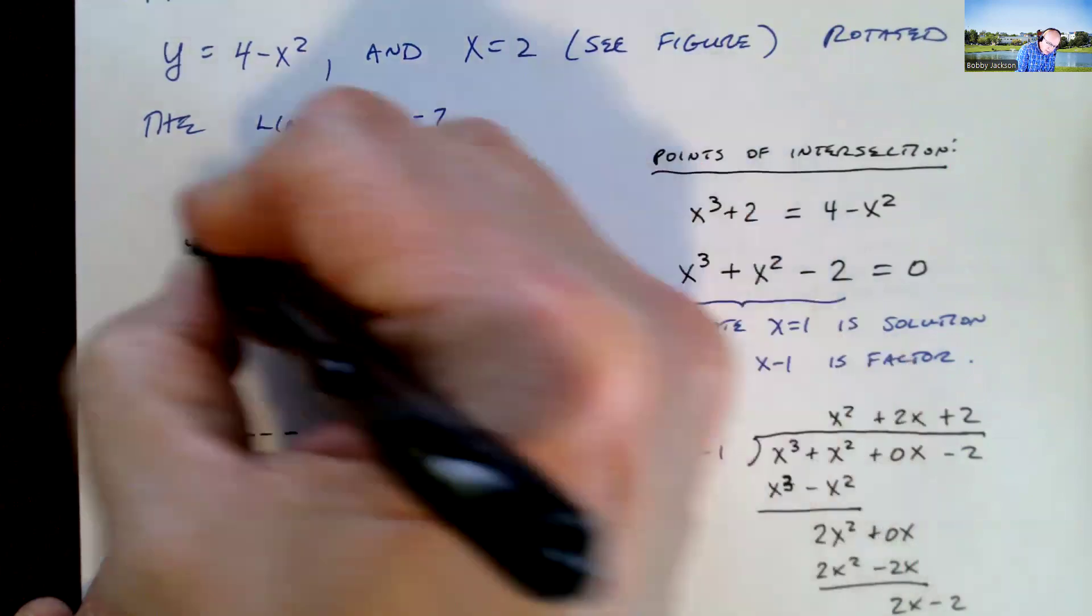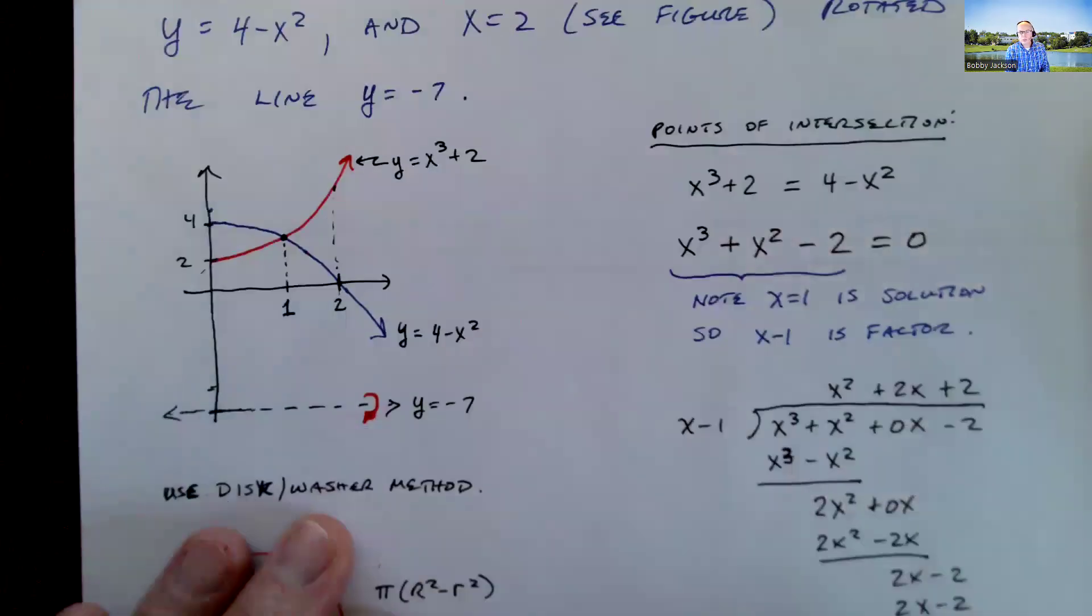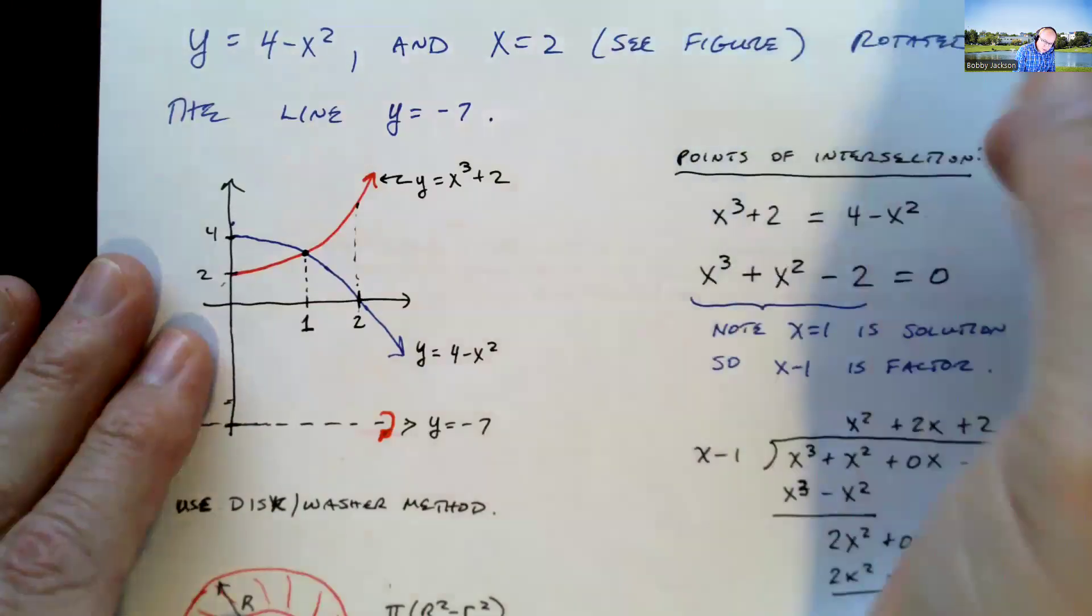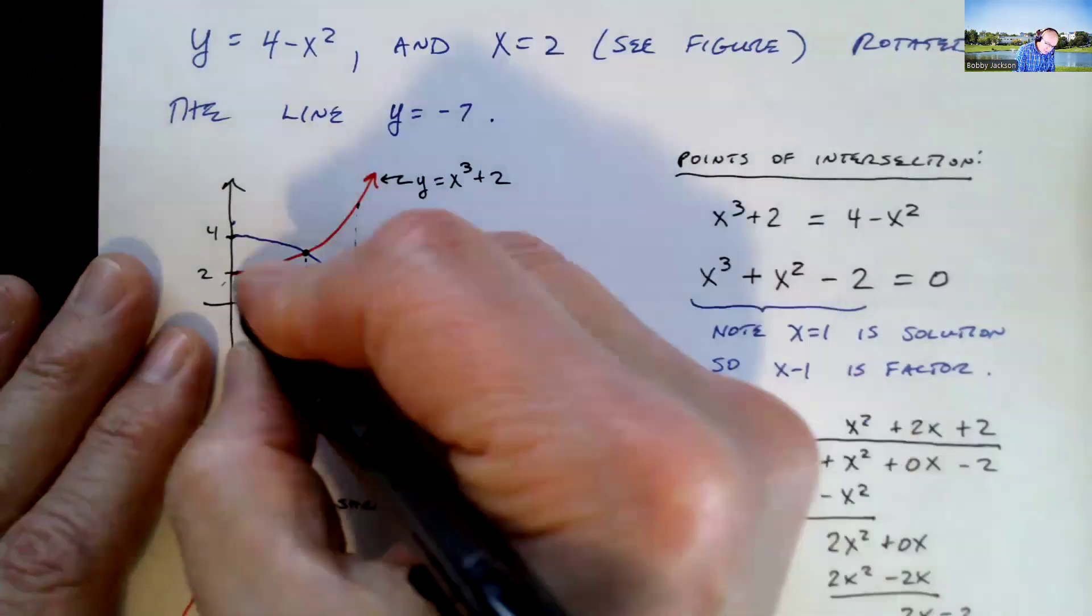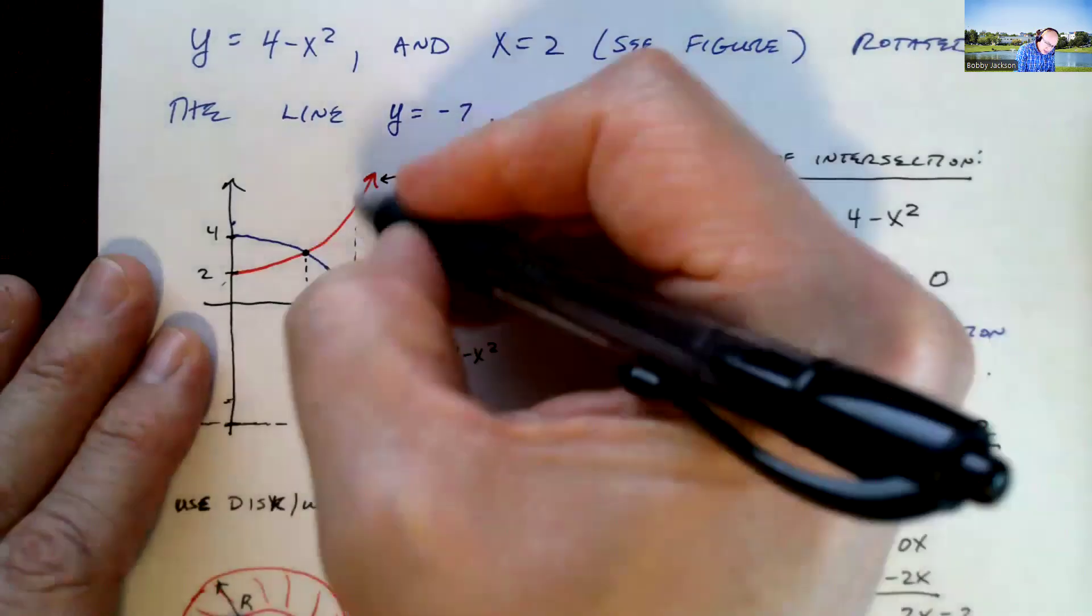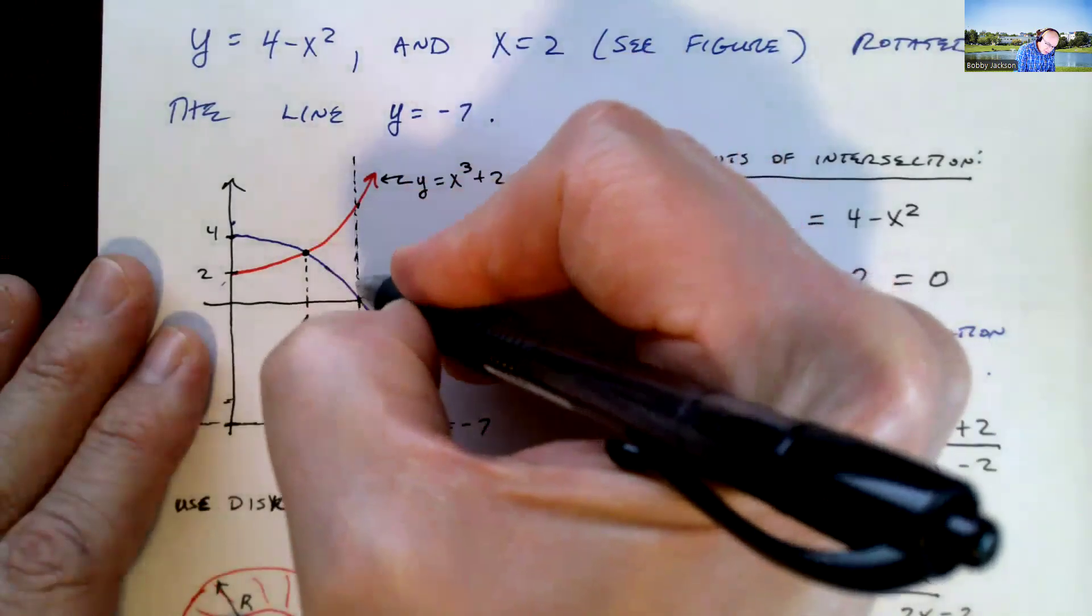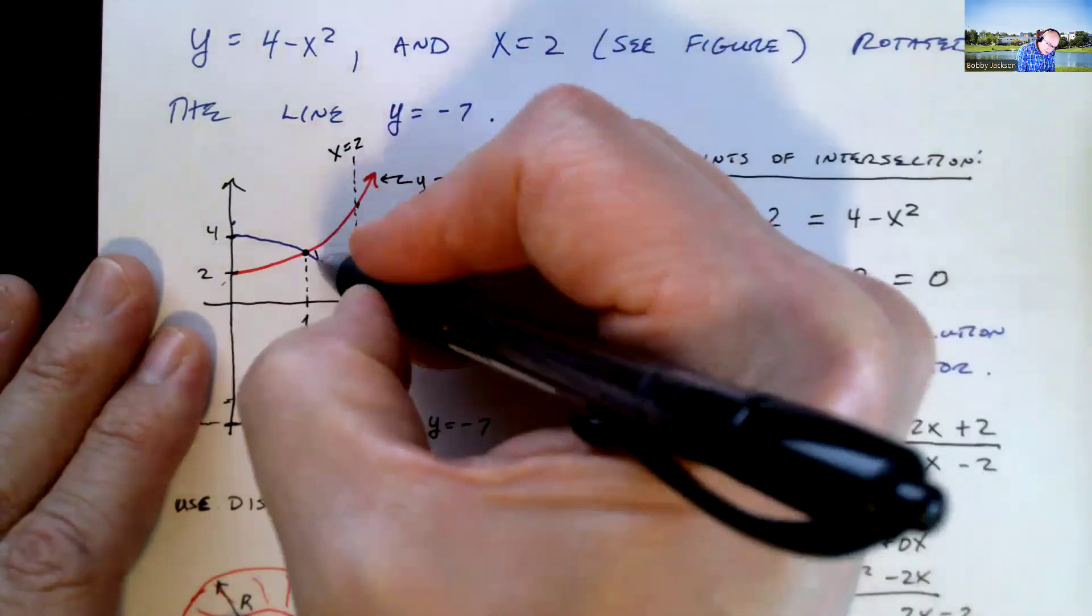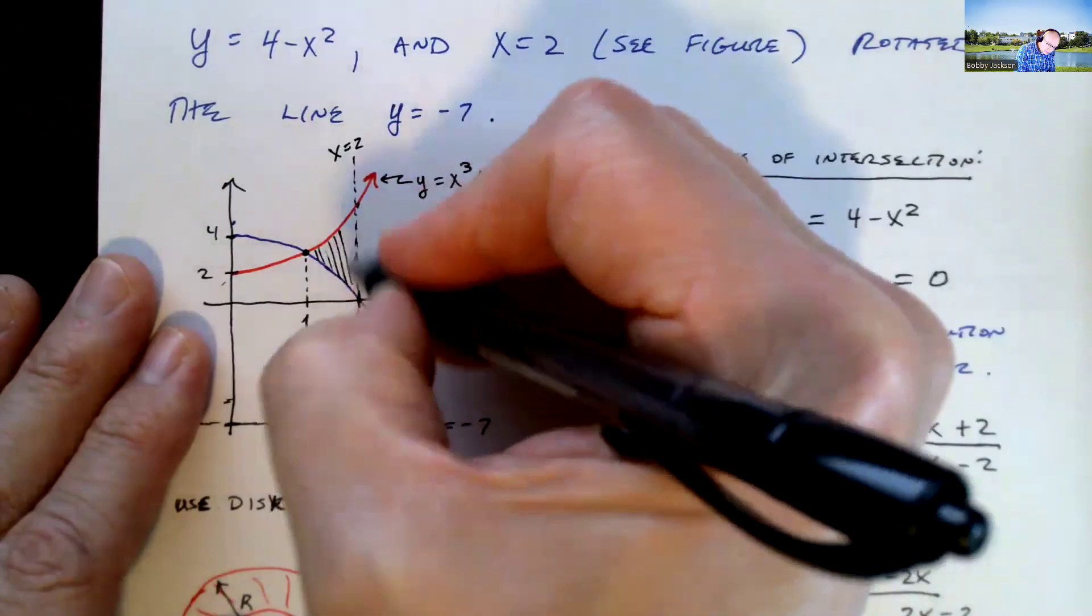And then up here, that height is going to be at 10 as we computed. Bottom line is we can see the region enclosed by these three graphs, the graph of y equals x cubed plus 2, graph of 4 minus x squared, and the graph of this vertical line, which is x equal 2, is this region here.